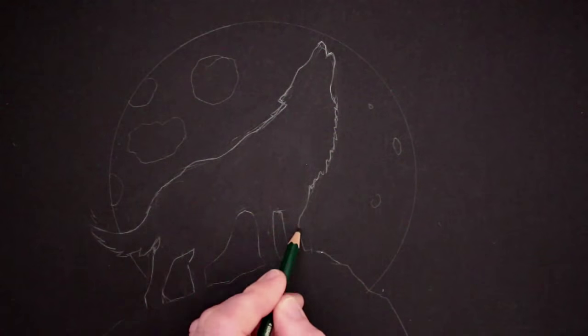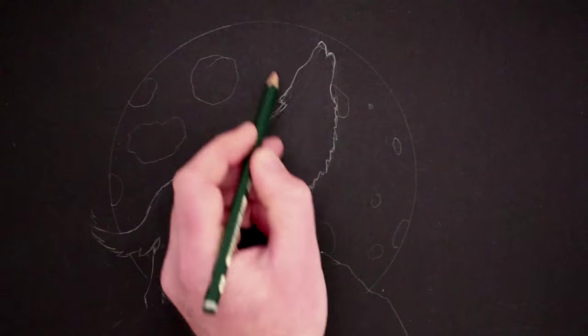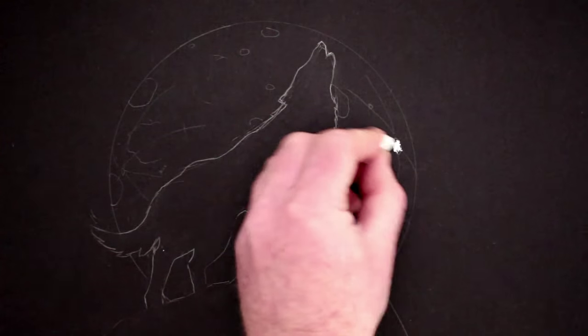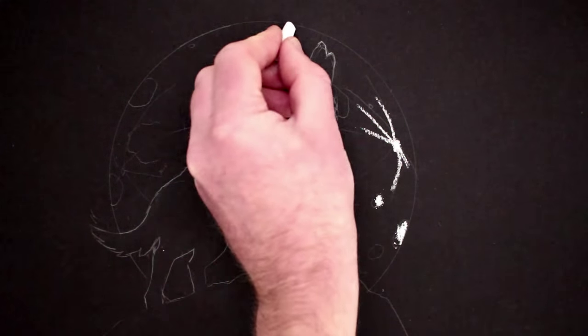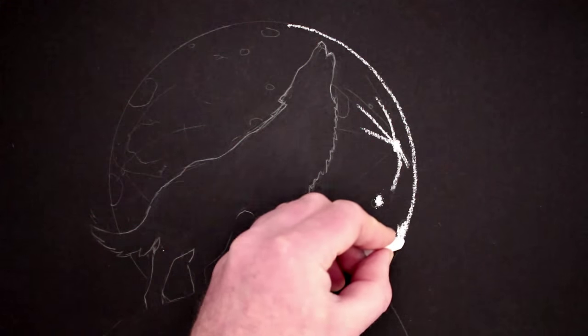I'll speed up obviously this part of the drawing. I want to try and make the moon so it looks so it glows. So a soft white pastel is good for that because you can smudge it with your fingers, so I just draw the moon in.